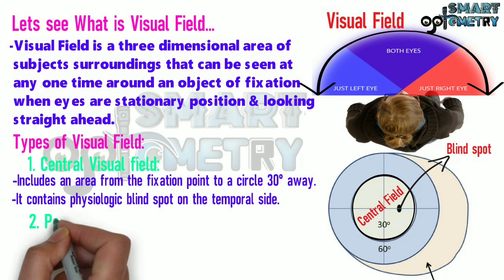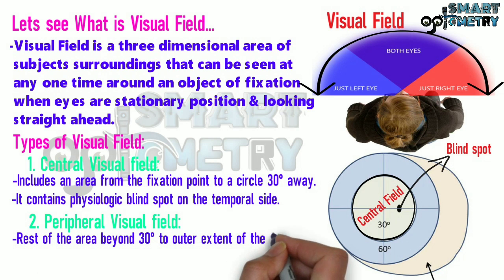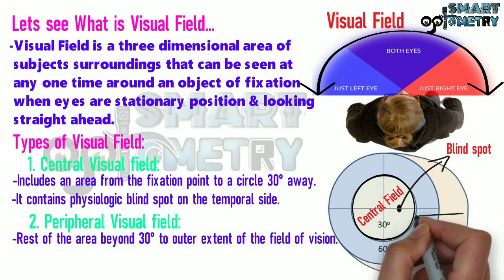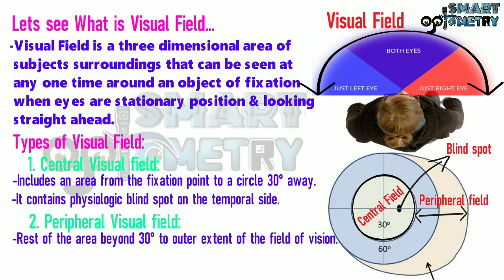2. Peripheral visual field: the rest of the area beyond 30 degrees to the outer extent of the field of vision is called the peripheral field. Here, around the central field, you can see the extent of the peripheral field.